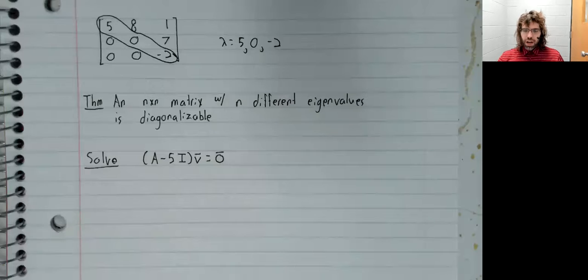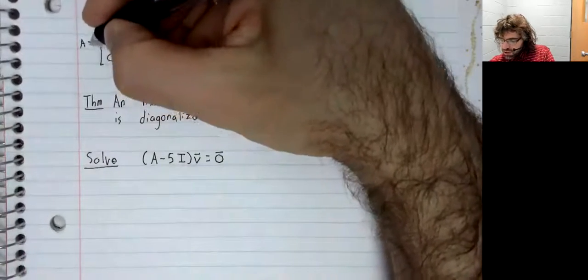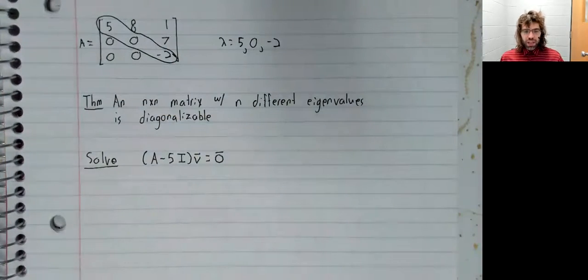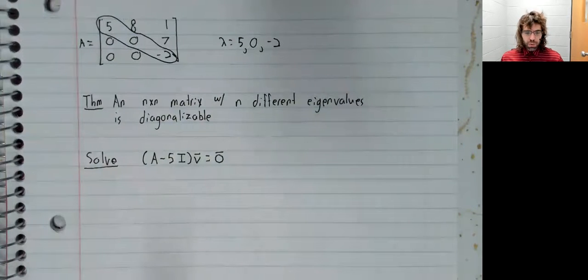Finding eigenvectors is simply a matter of solving matrix equations. We should be able to do that, so let's skim through this. When we solve, if we're calling this A, when we solve A minus five I times V equals zero, well, we'll get infinitely many solutions.